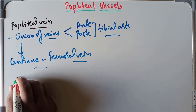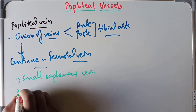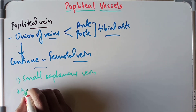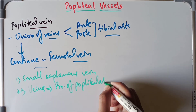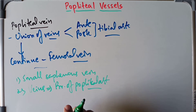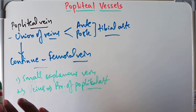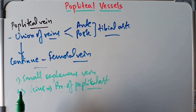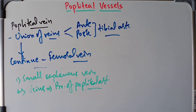The tributaries of the popliteal vein include the small saphenous vein as well as the veins corresponding to the branches of the popliteal artery. All of these combine, and their union results in the formation of the popliteal vein, which continues through the adductor hiatus as the femoral vein. This concludes our discussion of the anatomy of the popliteal artery and popliteal vein, including their relations, branches, and tributaries.